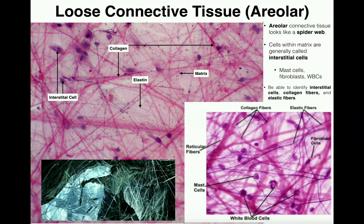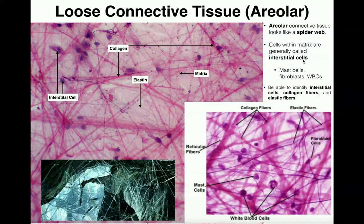The first tissue we're going to look at is areolar connective tissue, also called loose connective tissue. The best way to describe it is it looks like a spider web. There are three major things to identify: first are interstitial cells, which are just the various cells that perform functions within the tissue. I'm not going to require that you identify the specific type — they include mast cells, fibroblasts, and white blood cells. The purple dots you see, with dark purple nuclei, are examples of interstitial cells.